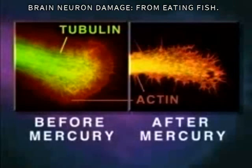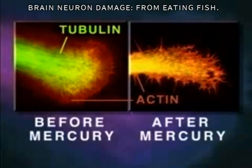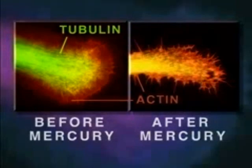Shown here is a neurite growth cone stained specifically for tubulin and actin, before and after mercury exposure. Note that the mercury has caused disintegration of tubulin microtubule structure.